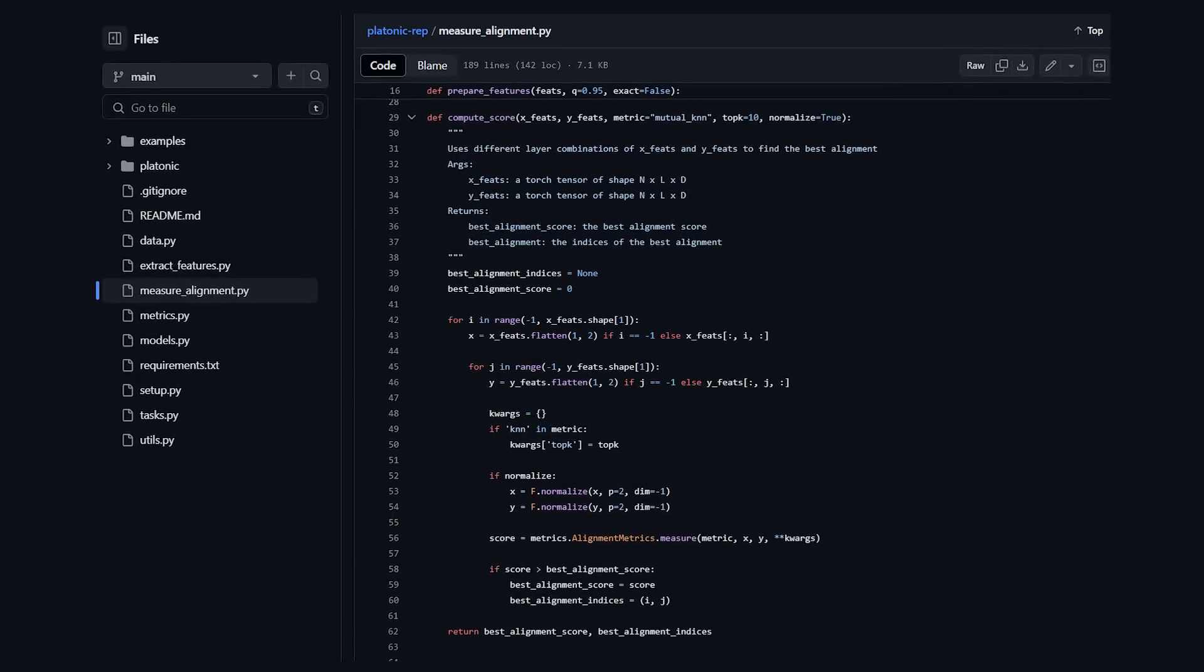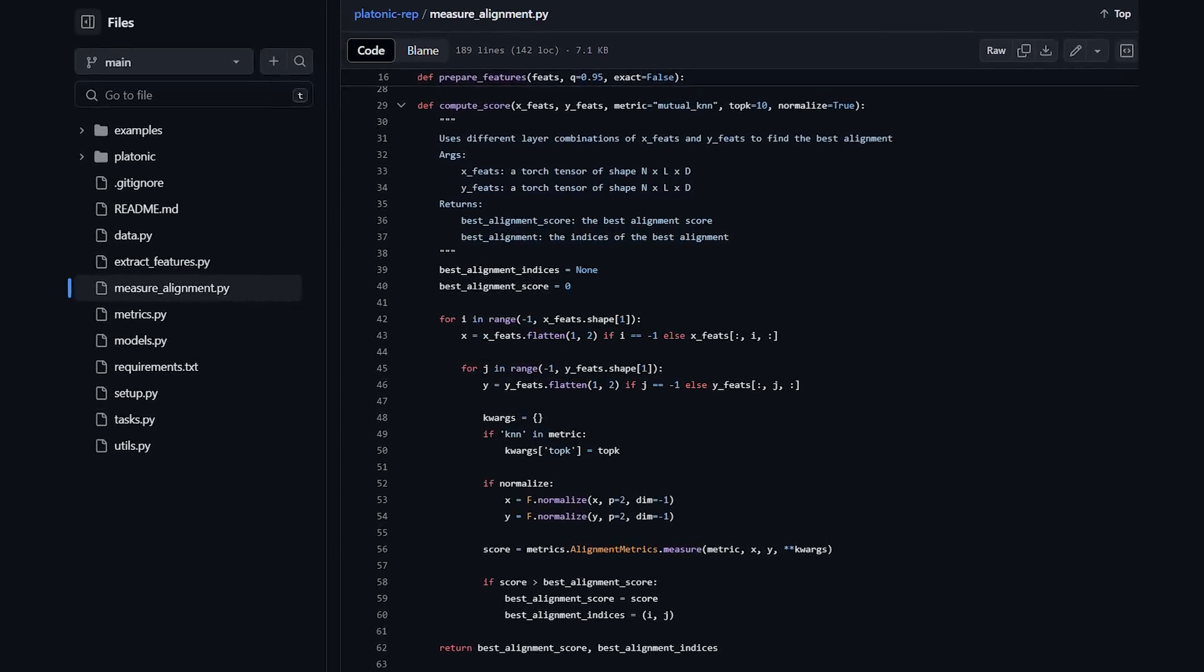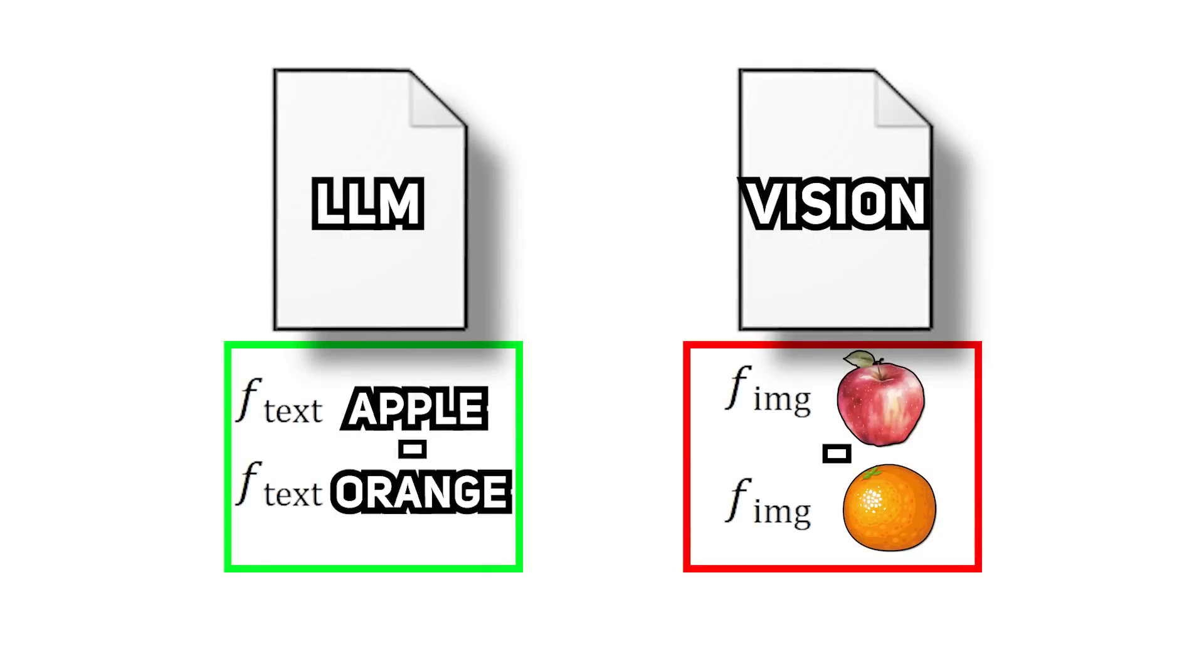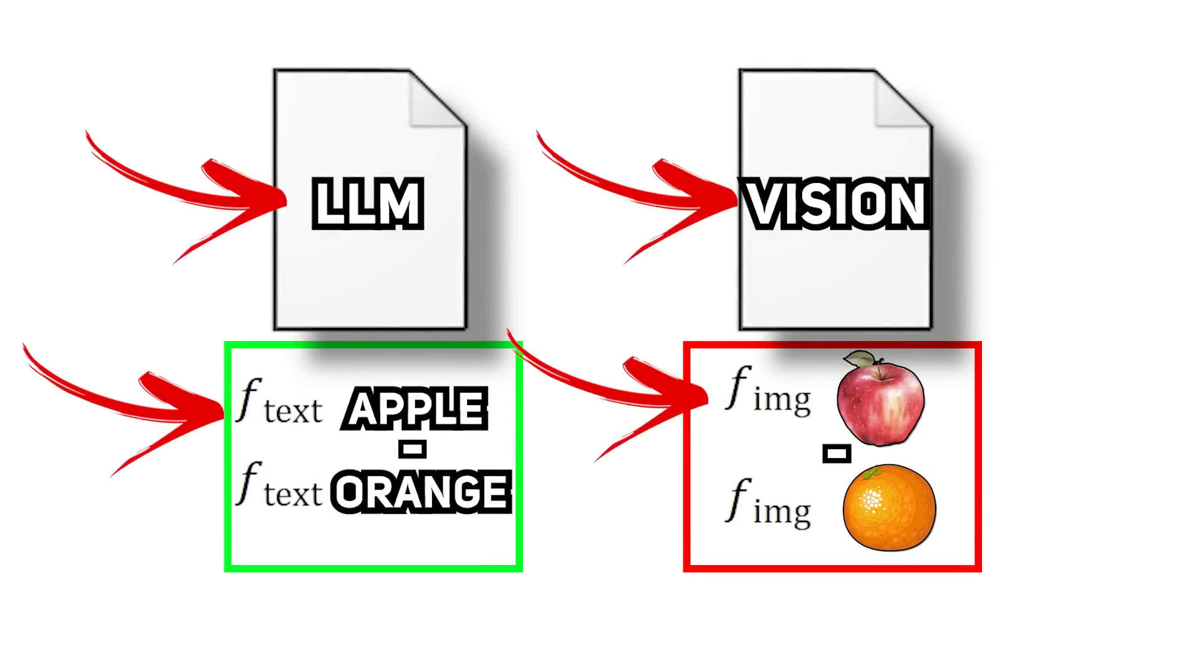Then they say these two models are aligned if the measured distances are roughly the same in both of the models. Well, of course, this is a simplified explanation. You can refer to the code to see exactly how they have done it. And so they use this method to test if representations in different models with different modalities are converging.